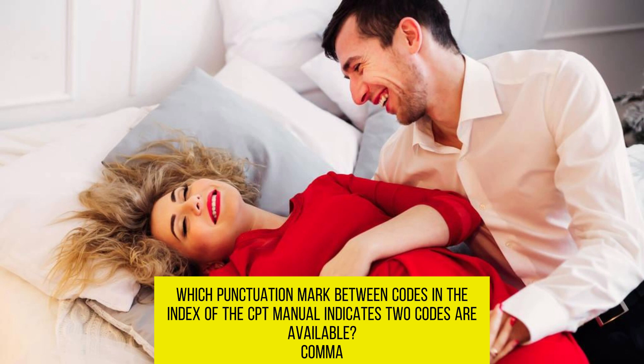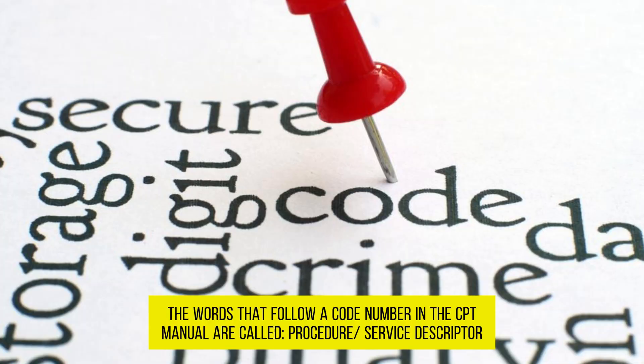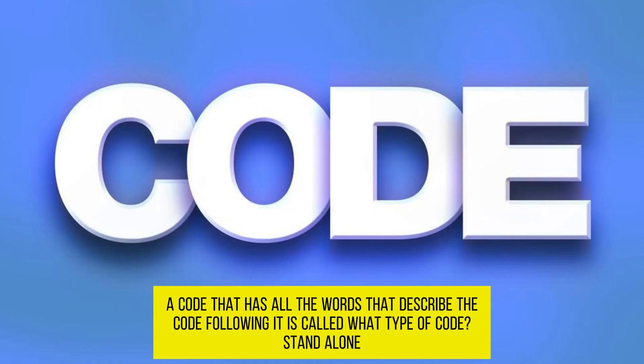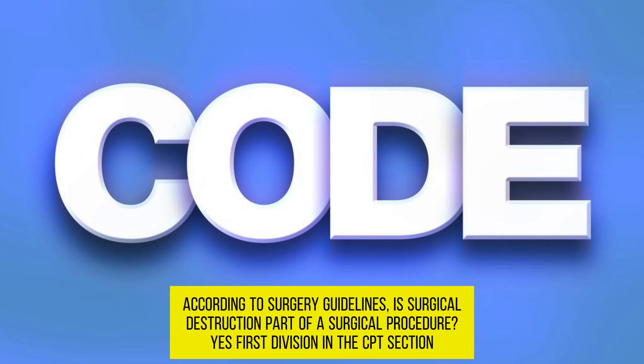Which punctuation mark between codes in the CPT index indicates two codes are available? Comma. The words that follow a code number in the CPT manual are called the procedure service descriptor. A code that has all the words describing it following it is called what type of code? Stand-alone. According to surgery guidelines, is surgical destruction part of a surgical procedure? Yes.